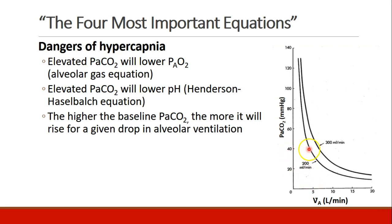Here's a patient with a normal PaCO2 of 40 — we'll just look at this one curve on the left — and that corresponds to a minute ventilation of about five liters per minute. If we drop their minute ventilation, we see a very steep rise in pCO2. On the other hand, here's a patient who's hyperventilating with a PaCO2 of 20 at a minute ventilation of about 10 liters per minute. Cutting their minute ventilation in half leads to a relatively small increase in PaCO2.